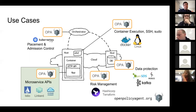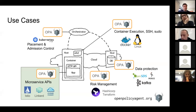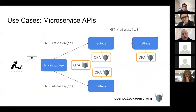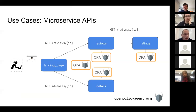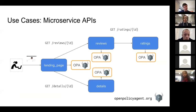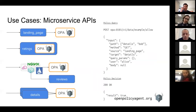Another use case we've seen quite a bit of interest in is microservice API authorization. The problem being solved is you've got a collection of microservices and now need to add authorization on top. Each API call that a microservice sees is sent to OPA to ask for an authorization decision. OPA is running on the same host as every microservice, giving you high performance and high availability — you're not making a network hop to hit some external service to get an authorization decision.